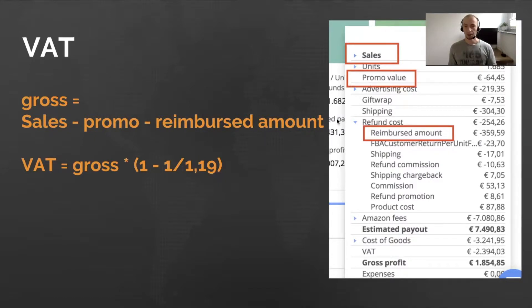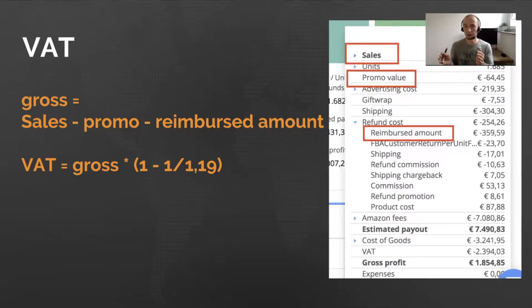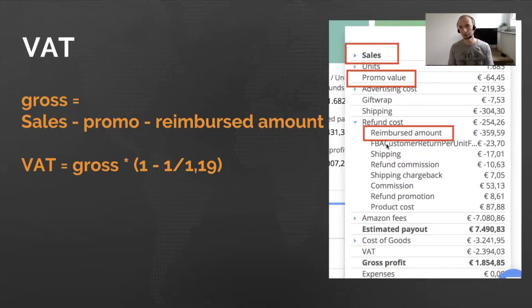The next position we need to account for when calculating VAT is the reimbursed amount — and don't confuse it with refund cost. Under the refund cost line, the first item is the reimbursed amount of money. When a customer sends a product back, Amazon gives them the full sum they paid for the product back, including VAT. This is why we need to subtract this amount from the total when calculating VAT, because we're reimbursing the VAT back to customers through these refunds.